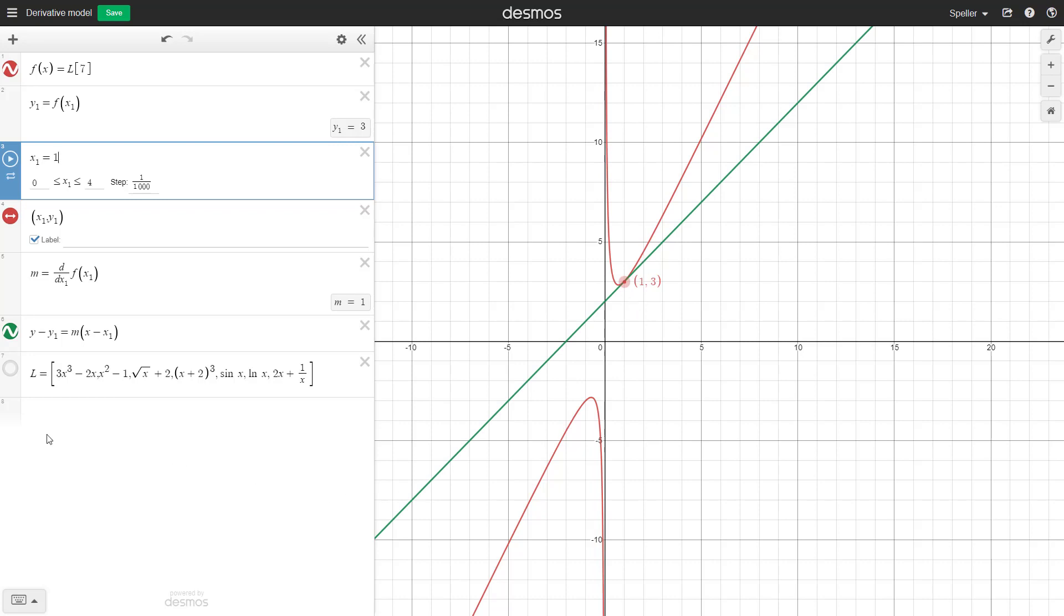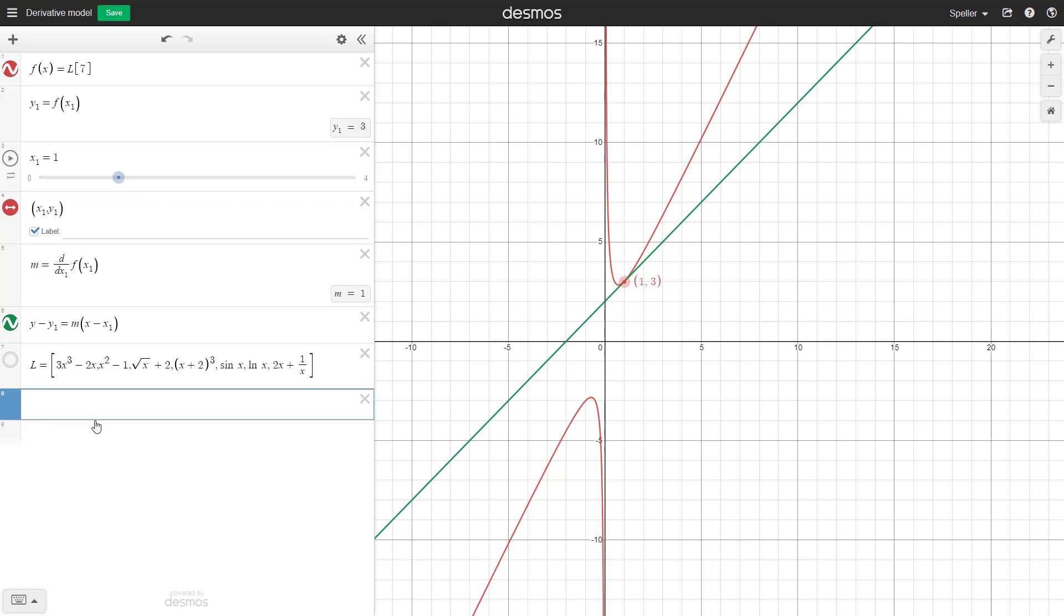Well, we can do that here. Let's create another point at that same location and call it 1 comma 3.